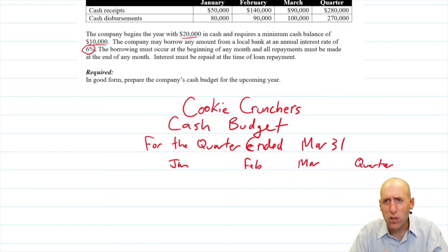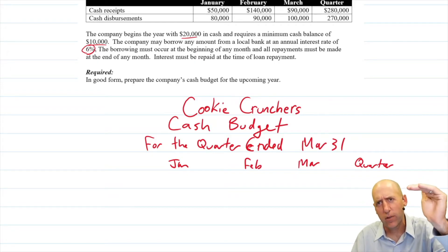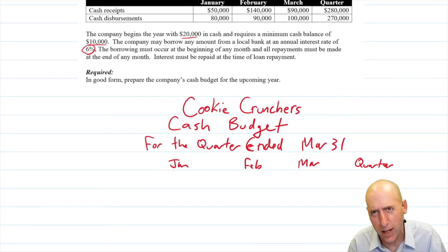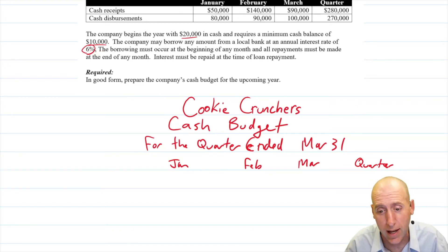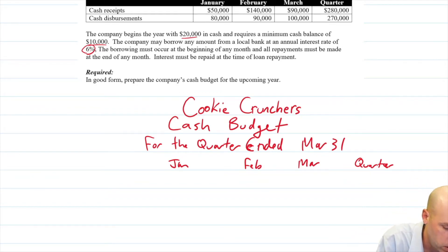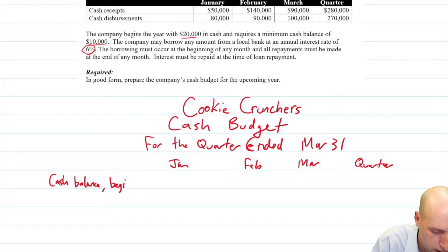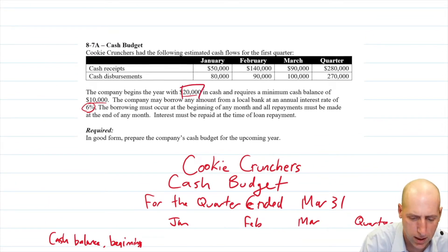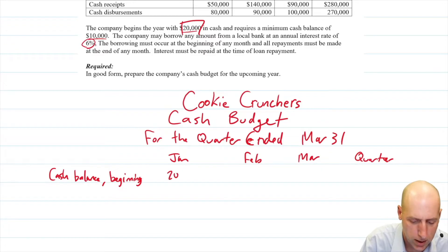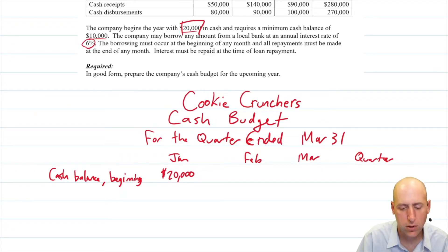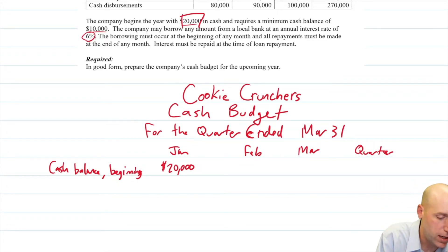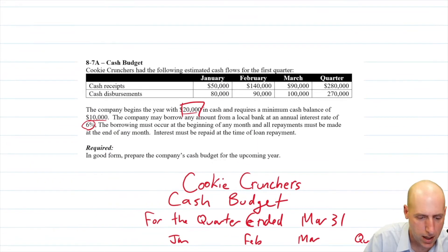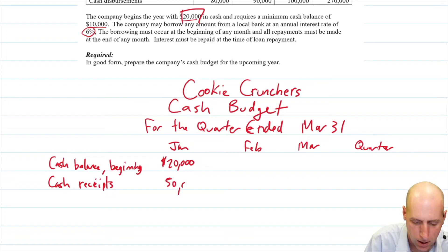The beginning part of the cash budget — we have to do them one month at a time. For January, we say: here's what we started with for cash, here's what came in, here's what went out, here's what we ended with for cash, and do we need to borrow any money? So let's start with our cash balance beginning. Our beginning cash at the start of January — the company begins the year with $20,000 cash, so 20,000 is our beginning cash balance for January. Now we want to know how much cash is coming in: cash receipts of $50,000, which are added.